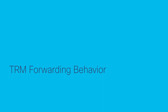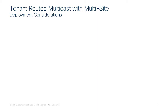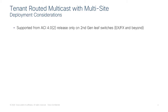Let's start with the TRM forwarding behavior and some high-level deployment considerations for tenant routed multicast with multi-site. This is supported from ACI 4.0.2 only when deploying second-generation leaf switches — EX, FX, and beyond. That means the source and receiver connected inside the data center can only be connected to leaf nodes that have hardware compliant with EX, FX, or newer.